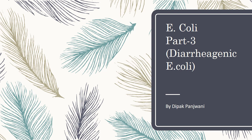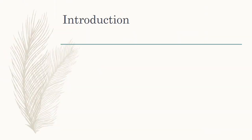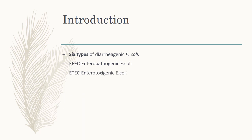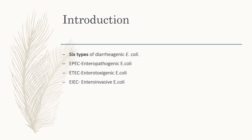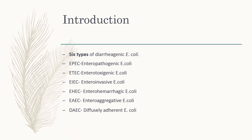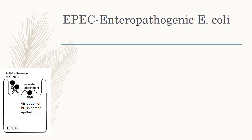Welcome to the e-learning session on E. coli part 3, which covers diarrheogenic E. coli. There are six types: EPEC (enteropathogenic E. coli), ETEC (enterotoxigenic E. coli), EIEC (enteroinvasive E. coli), EHEC (enterohemorrhagic E. coli), EAEC (enteroaggregative E. coli), and DAEC (diffusely adherent E. coli).